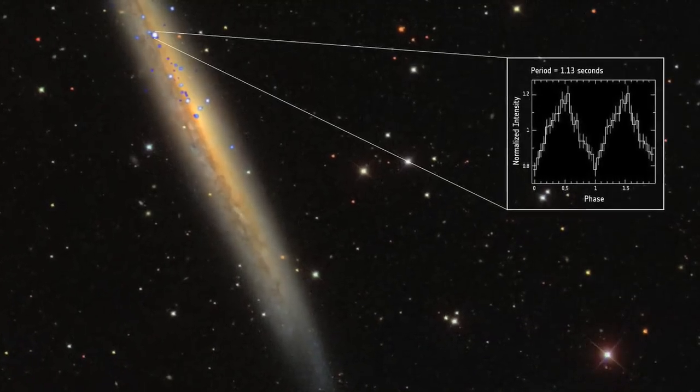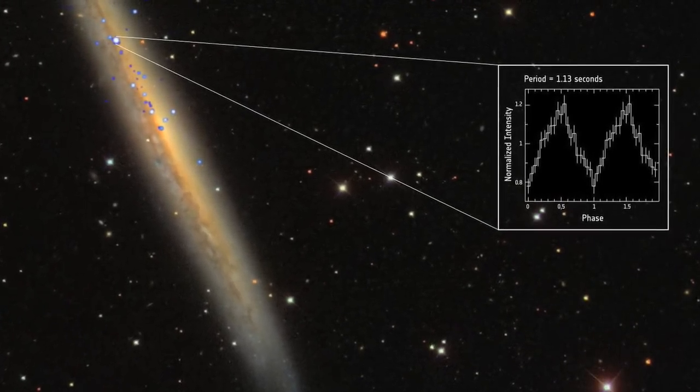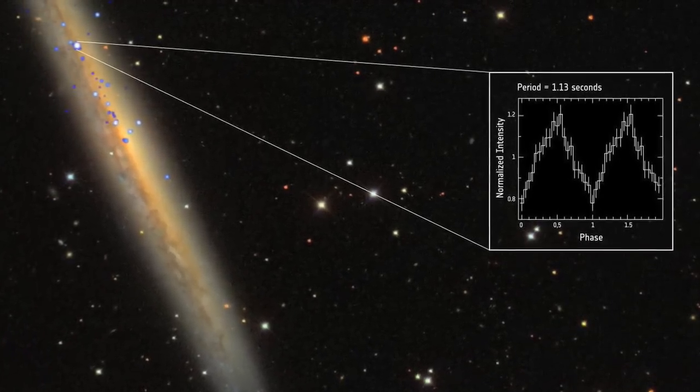Identified as NGC 5907X1, the pulsar appears to shine with a brightness that is a thousand times greater than the object's theoretical limit.